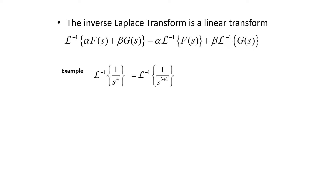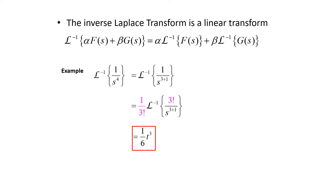We're going to multiply by 3! in the numerator and divide by 3! on the outside so that we don't change our problem. Now what we have inside the curly braces — 3!/s^(3+1) — matches the formula exactly, so we can take the inverse Laplace transform. This gives us 1/6 times t³.